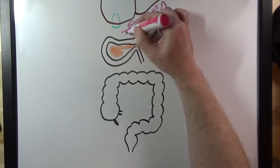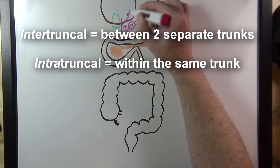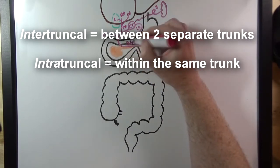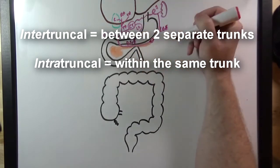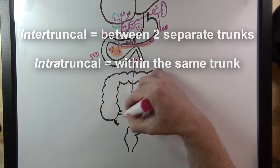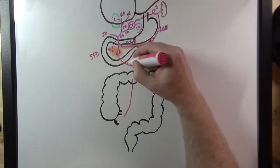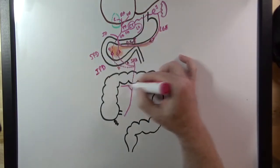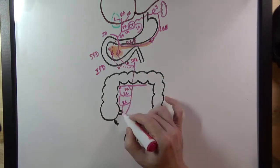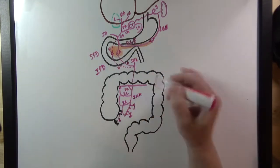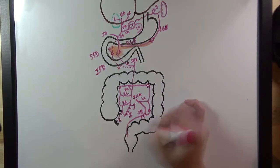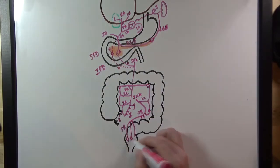I'll talk about the intertruncal and intratruncal anastomoses so you can better understand how the body keeps tissues perfused with blood if there's a blockage. By the end of this video you'll be able to draw these trunks and branches, which will make your life much easier when you try to identify these vessels in the cadaver dissection. Are you ready to draw? Let's do this!